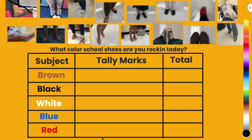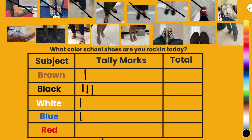First, I have a brown shoe, so I'll put one tally mark for brown. Then we have a blue shoe, so I have one tally mark for blue. Then we have a white shoe. Then we have a black shoe, another black shoe, another pair of black shoes. Oh, now we have a red shoe, white shoes, brown shoes, another pair of brown shoes. Oh look, brown shoes and black shoes are tied right now.